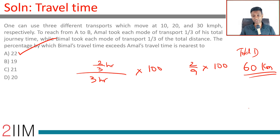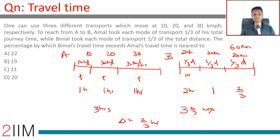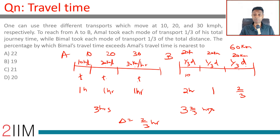For Amal's case, since travel times are equal, the distances covered are in the ratio of the speeds — 1:2:3 — so the total distance should be a multiple of 6. For Bimal's case, distances are equal, so the total should be a multiple of 3. 60 kilometers satisfies both conditions perfectly.